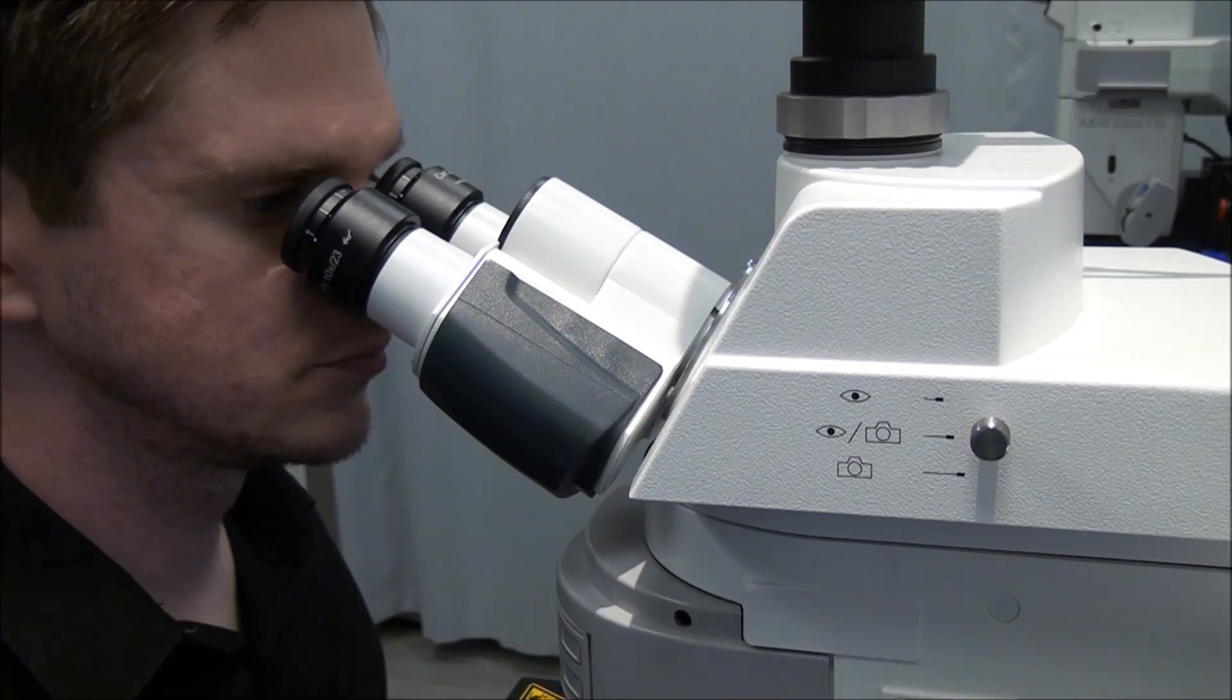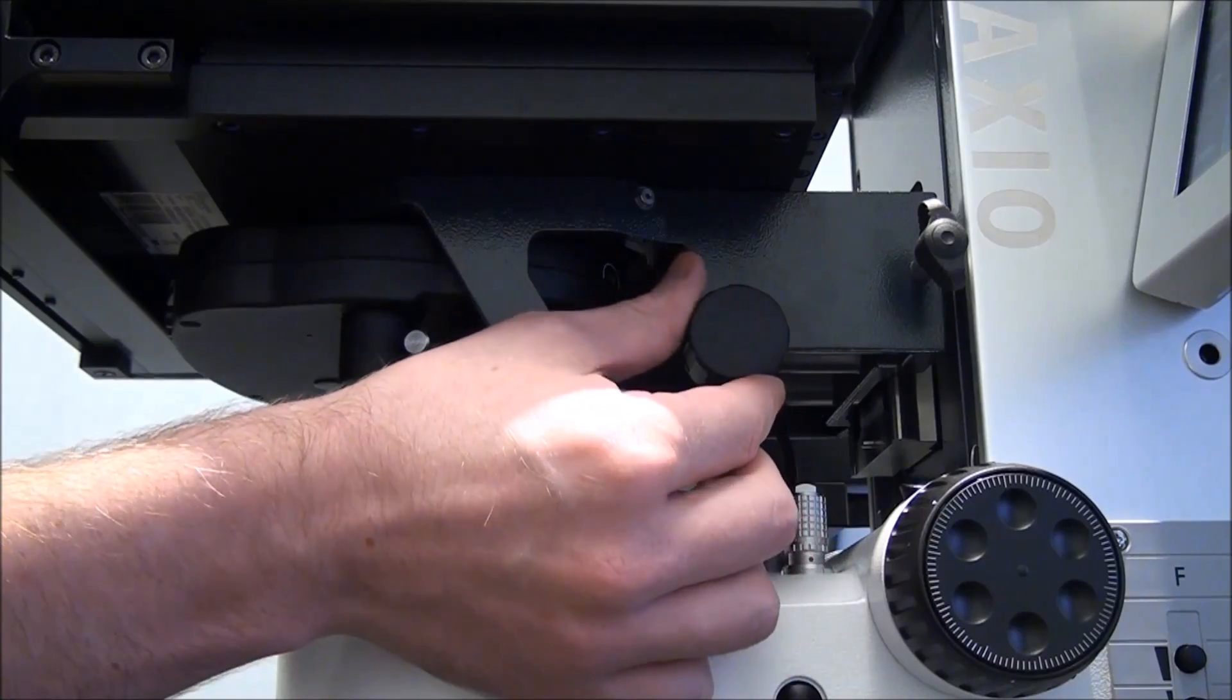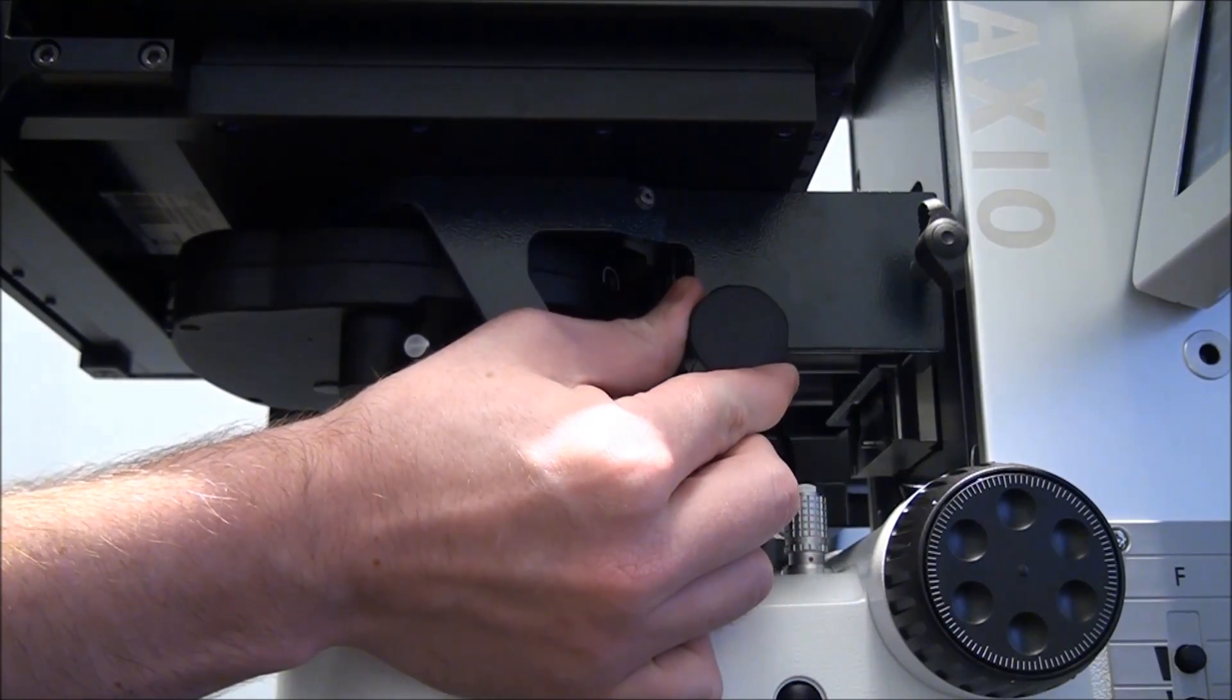Step 9: While looking through the eyepieces, lower the condenser by rotating the condenser focus knob until the field diaphragm blades come into focus.